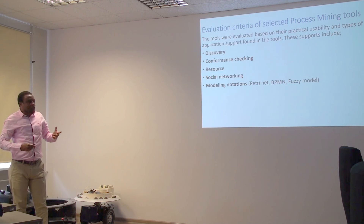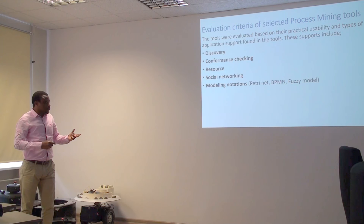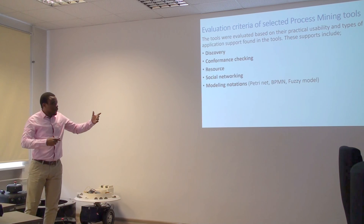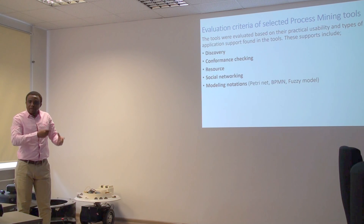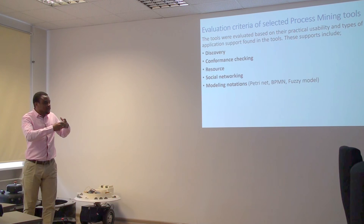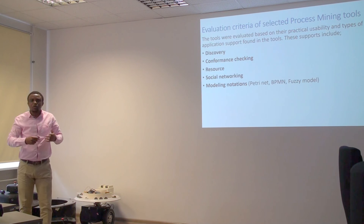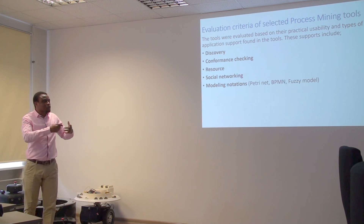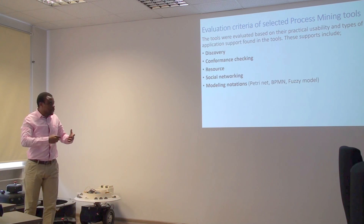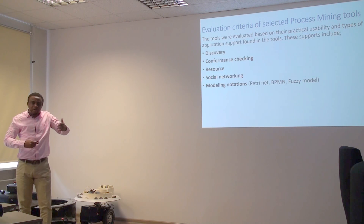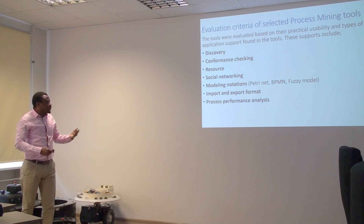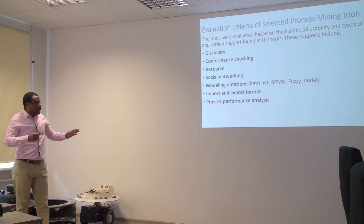Regarding modeling notation, this function in some tools can be fully converted. For example, a tool like DISCO uses the fuzzy miner algorithm to discover business process from the event log. The discovered process is called the fuzzy model. The fuzzy model cannot be further converted. But some tools use other algorithms like the heuristic miner and alpha algorithm to discover business process, and the discovered result can be further converted to BPMN. The import and export format also varies between tools. These are the functionalities used in evaluating the tools.